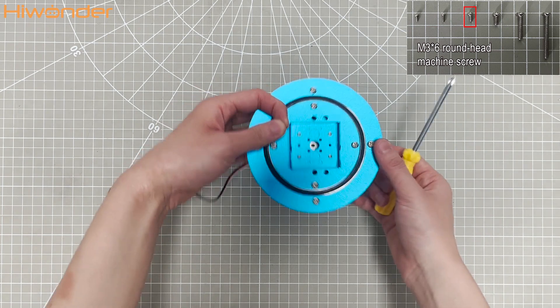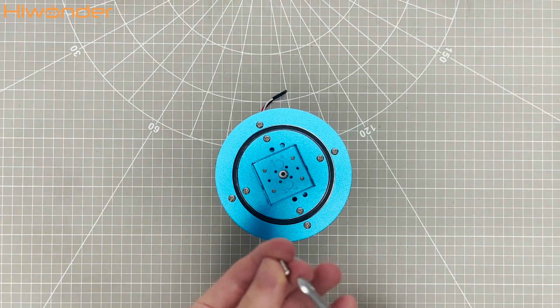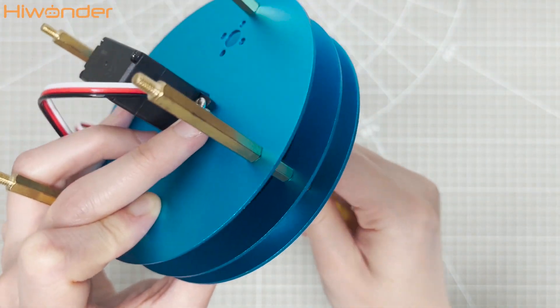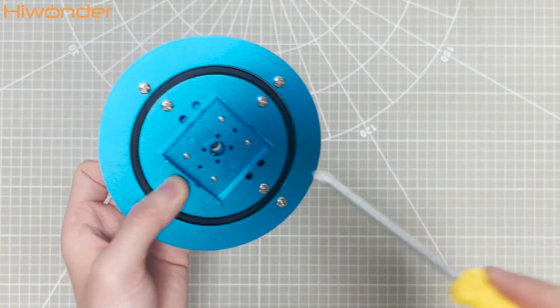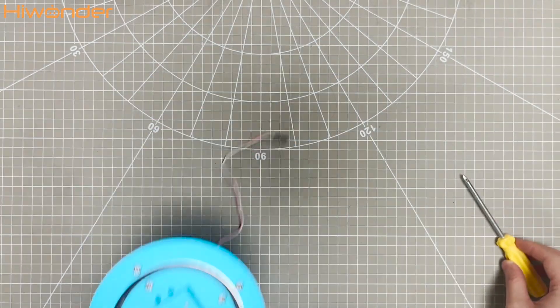Come to the last step, secure a screw into the servo horn. The rotating base is now completed. Please watch the next video to continue the assembly process.